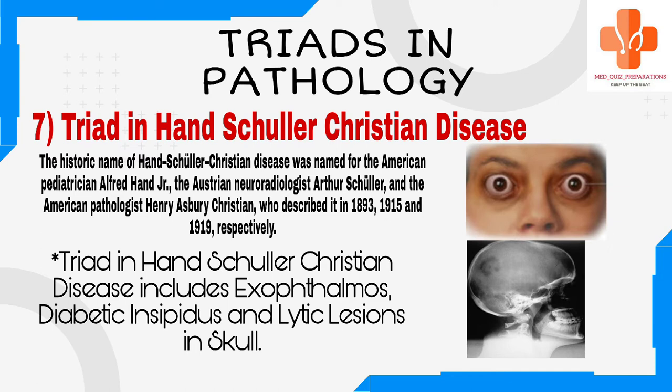The historic name of Hand-Schüller-Christian disease was named for the American pediatrician Alfred Hand Jr., the Austrian neuroradiologist Arthur Schüller, and the American pathologist Henry Asbury Christian, who described it in 1893, 1915, and 1919, respectively. Triad in Hand-Schüller-Christian disease includes exophthalmos, diabetes insipidus, and lytic lesions in the skull.